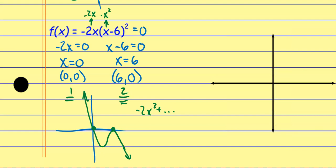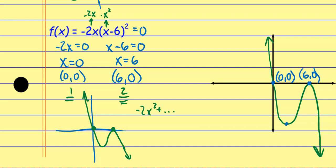For this one, my graph wasn't in too bad shape. The function comes pretty steeply down and then back up and down again. The ordered pairs I labeled: (0, 0) for the origin which I already knew, (6, 0) for the other x-intercept, and then I picked up the relative minimum at (2, −64). I have a sketch that represents the shape of the graph, and all these points that represent the accuracy at all those special points. Now I can see the relative maximums and minimums and interpret this in a better way.